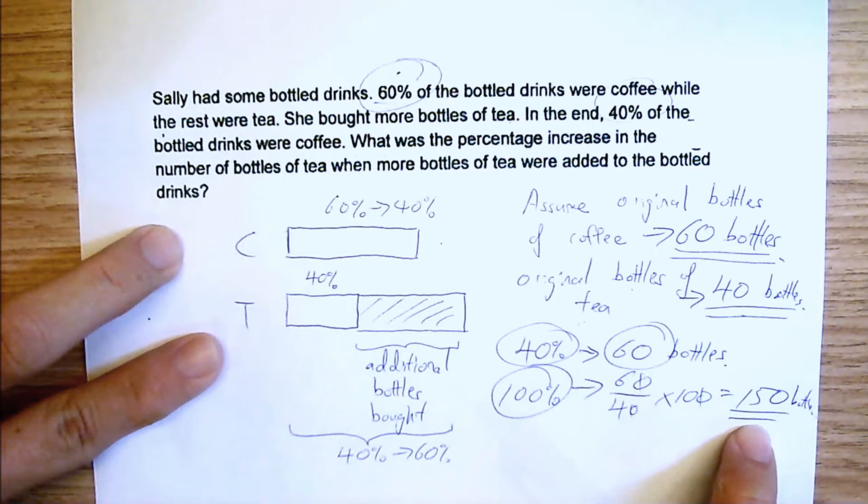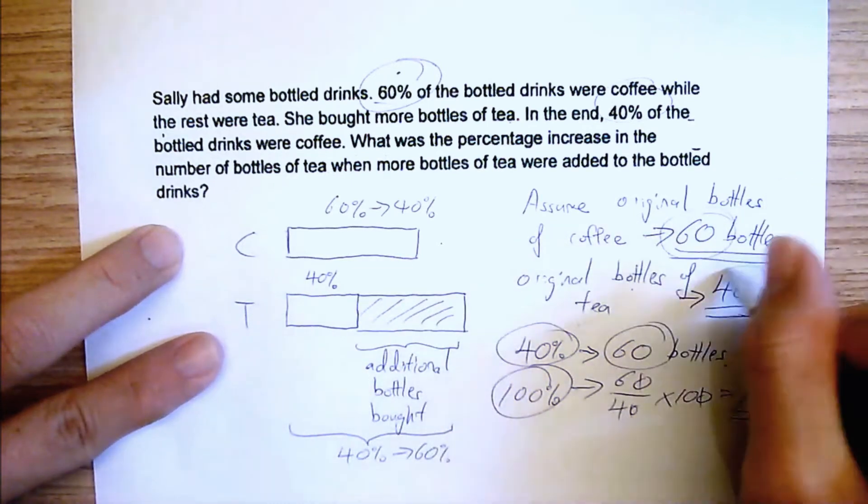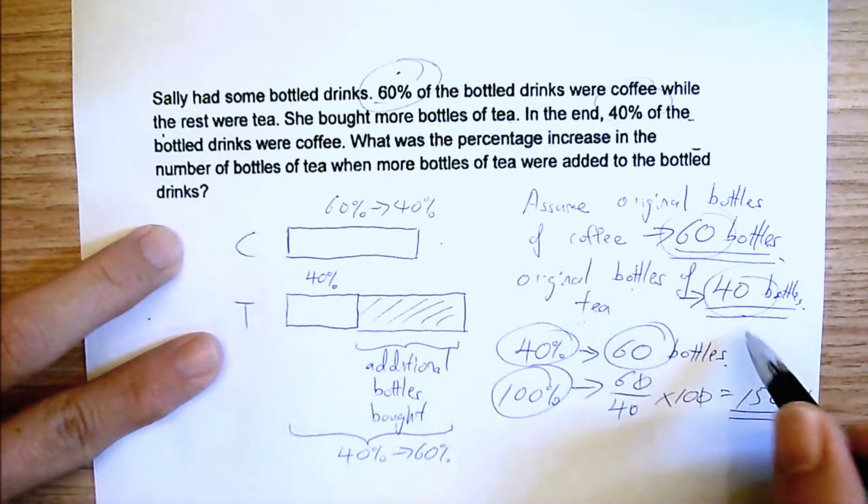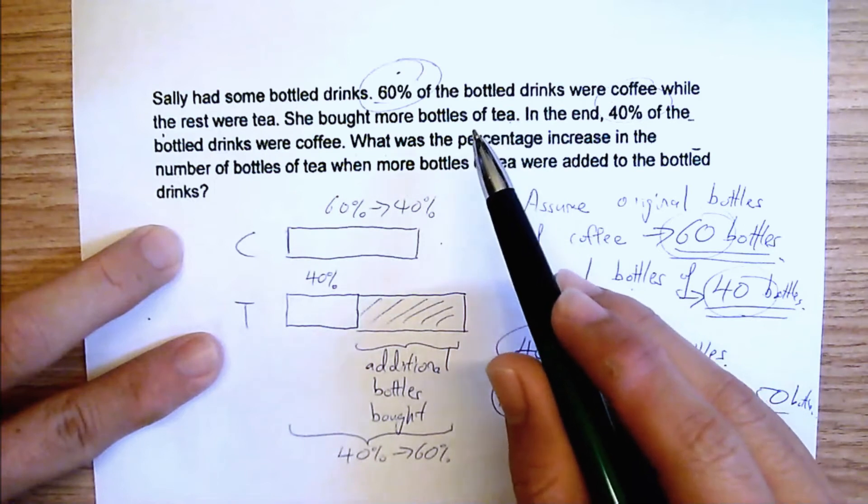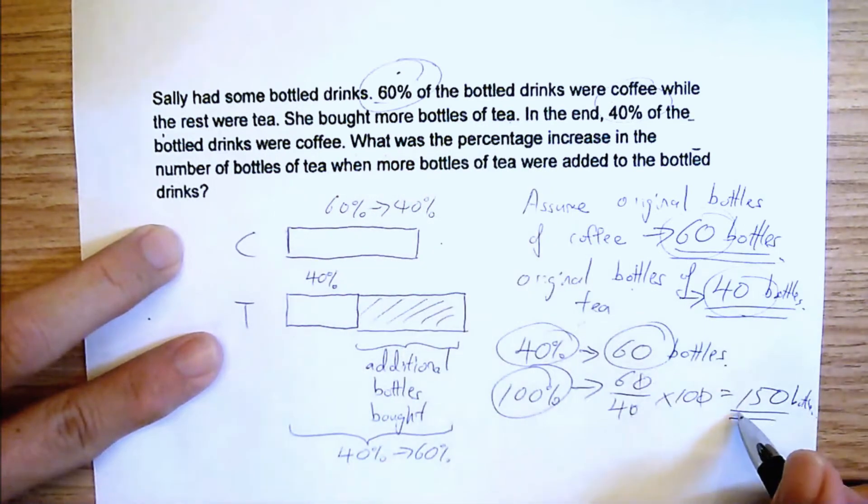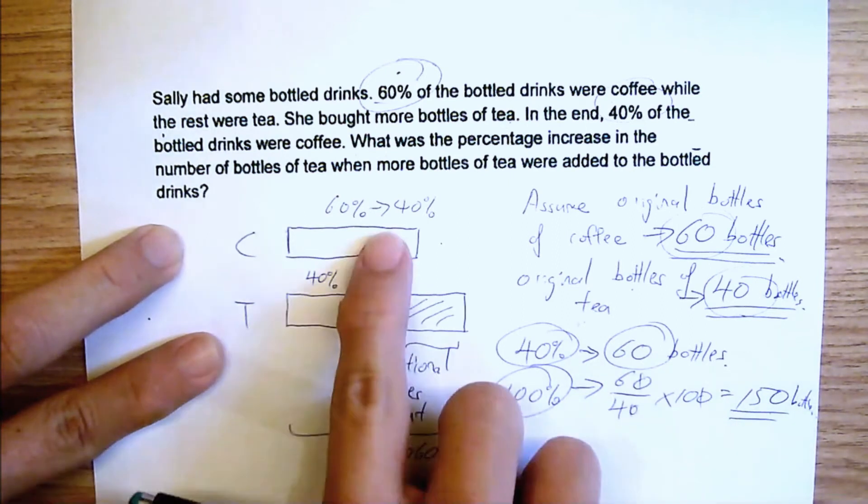Now, originally, how many bottles do they have? Originally, they have 60 plus 40. After buying more bottles of tea, they had 150 bottles. Which means that what? She bought how many bottles?